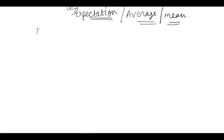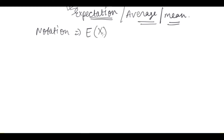This notation is capital E in brackets. That is capital E in braces. When the expectation is of X, we write E(X), and if it is Y's expectation we can write it like E(Y).